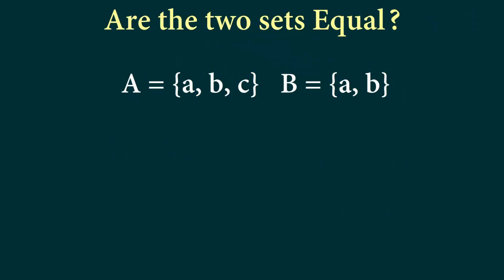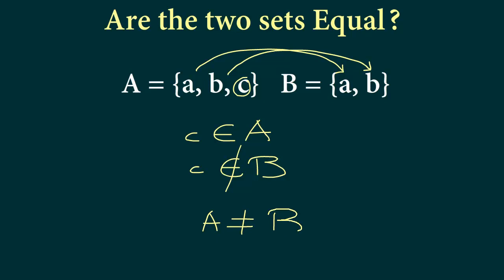So what about here? So what can we say in this particular example? Here we have a set A, uppercase A that contains elements a, b, c and we have set B that contains a and b. So we notice that the element a obviously exists, element b obviously exists but c is not in B. So for element c it belongs to A but element c it does not belong to set B and therefore we say that set A is not equal to set B.